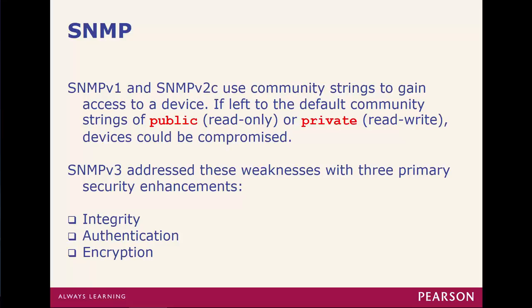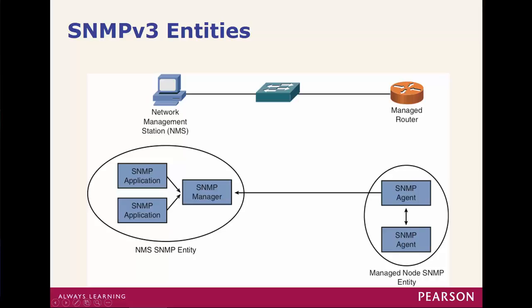Integrity ensures that packets were the same from source to destination — that someone didn't capture them, edit them, and put them back on. Authentication is verifying that you are who you say you are. Encryption could mean encrypting the information being sent or received so that no one can easily read it. The network management station goes to an SNMP manager, and they're going to be sent to multiple nodes using some type of encryption or authentication. As it's sent or received, it's going to check for integrity to verify it has not been modified.